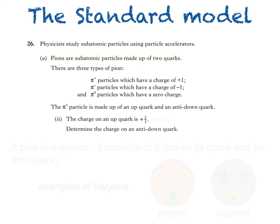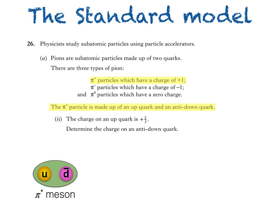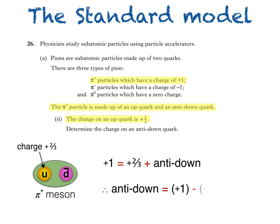Here's part two of the question. The charge on an up quark is plus two thirds. Determine the charge on an anti-down quark. Now remember that we're told that the pi plus particle has a charge of plus one, and that's made up of an up quark and an anti-down quark. That means that the charge on the up quark and the charge on the anti-down quark must add up to one. So the charge on the anti-down quark is just one minus the charge on the up quark, which gives us plus one third.